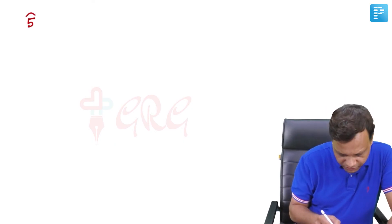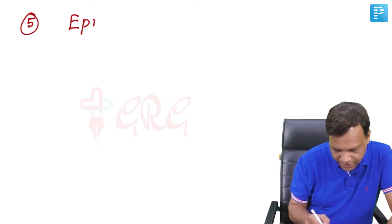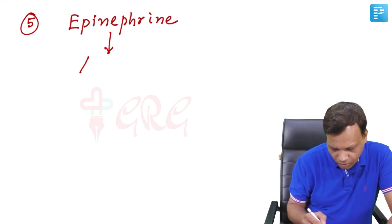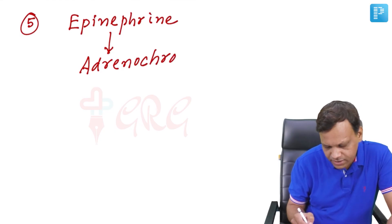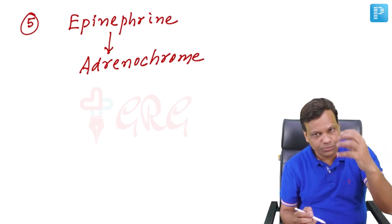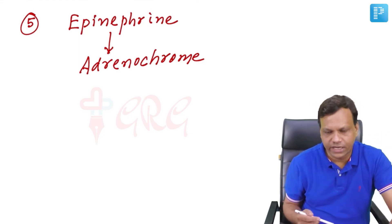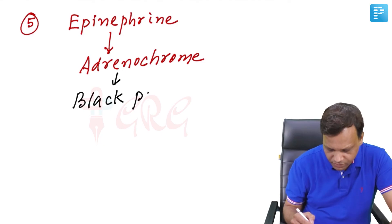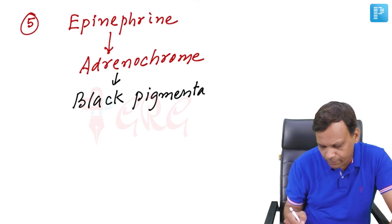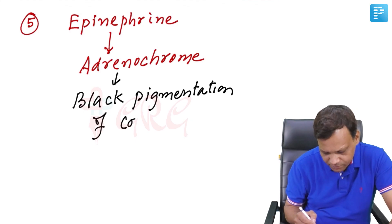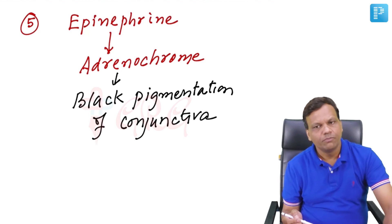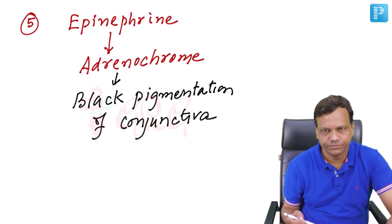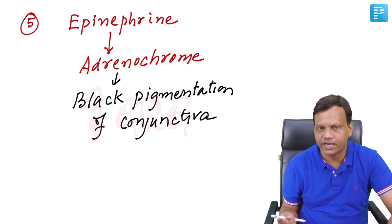Adverse effects of epinephrine — adrenaline: it is metabolized to form adrenochrome. When adrenaline is given as eye drops, with exposure to air it is oxidized to form adrenochrome, which is a black colored pigment that deposits on the conjunctiva. So if a question asks which drug causes black pigmentation of the conjunctiva, the answer is adrenaline. Note carefully: pigmentation of the iris is caused by prostaglandins, but black pigmentation of the conjunctiva is caused by epinephrine.